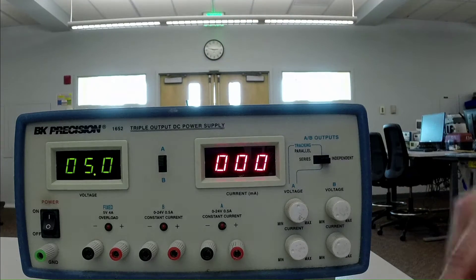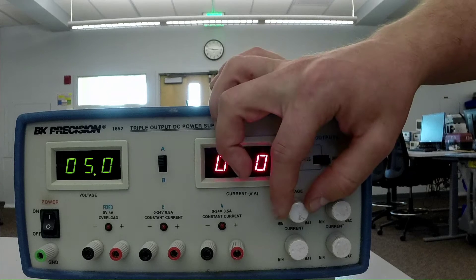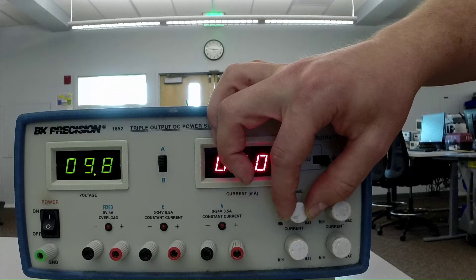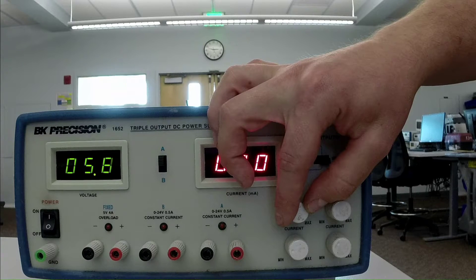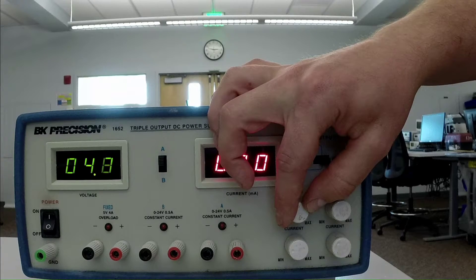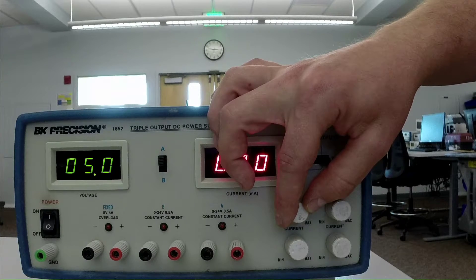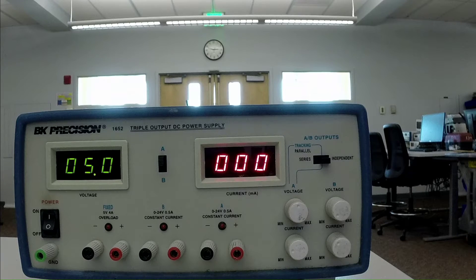Okay, we can go ahead and adjust that voltage with the A knob here. So if I were to change that, I can change how much voltage is being supplied. Let's set it back to 5 volts. And let's connect this to something so that some current will actually start flowing.